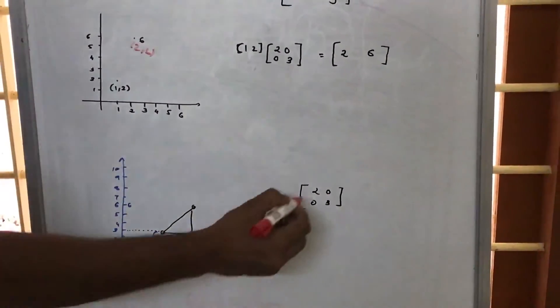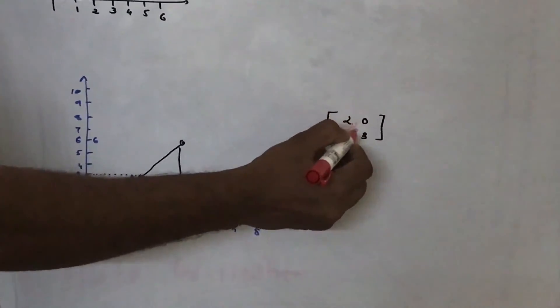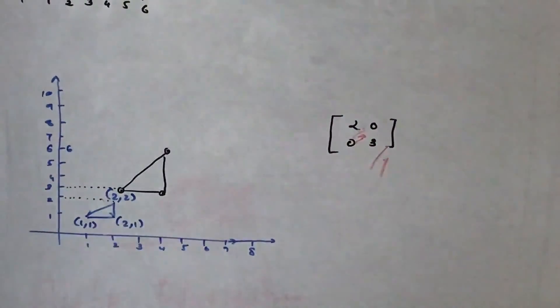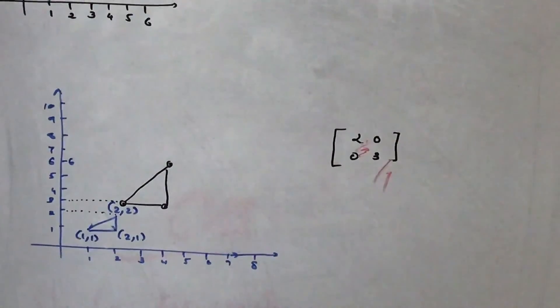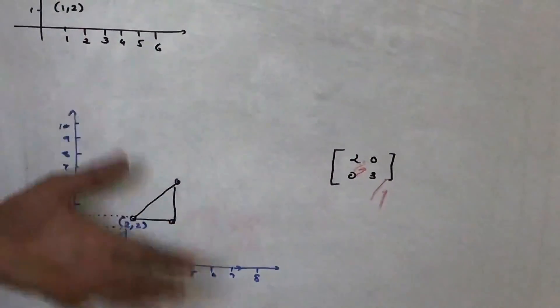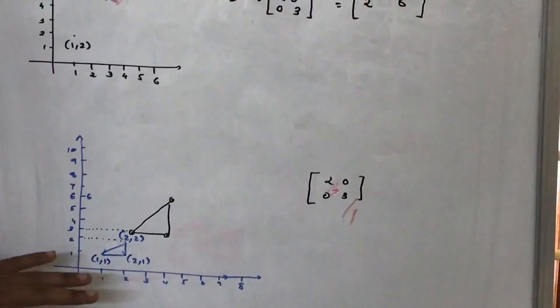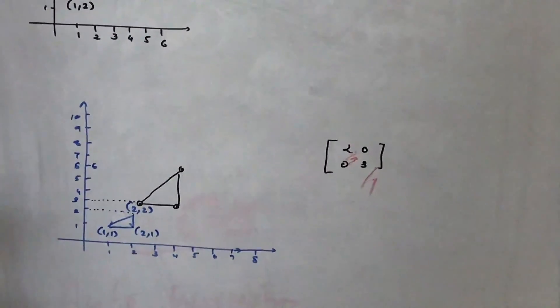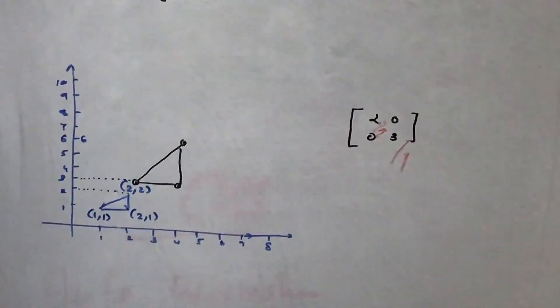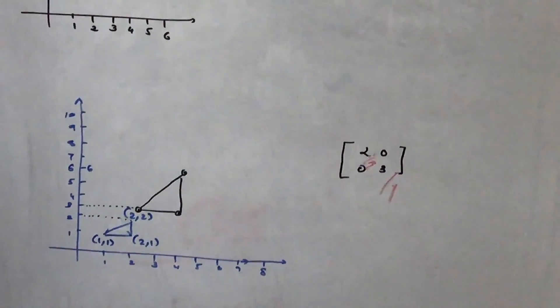Similarly if this were a fraction, this were 2 by 3 by 4 by 7 etc., then we will be able to reduce the size of this matrix. So we are able to increase or decrease the size of the given figure by multiplying with the scaling matrix. That process is being called as scaling. Thank you.